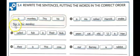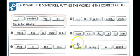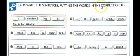For example: 'This is his monkey.' Go ahead and write sentences 1 through 5, putting the words in the correct order. Pause the video, and when you come back, I will play the audio so you can practice speaking.